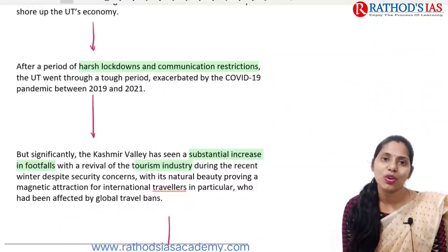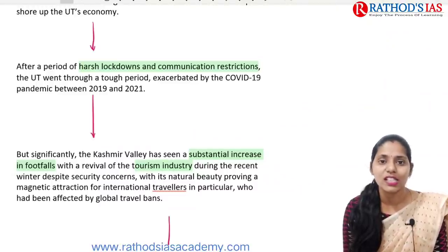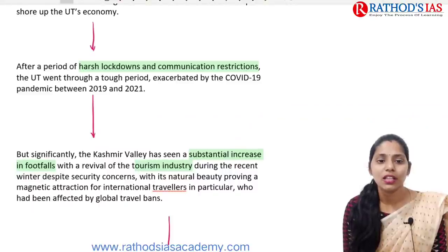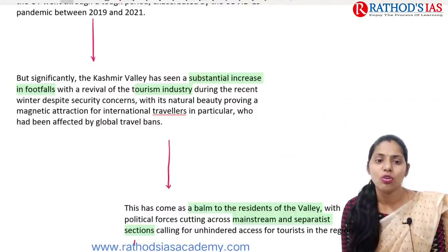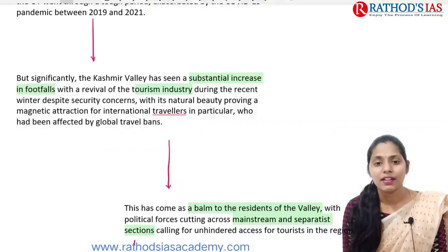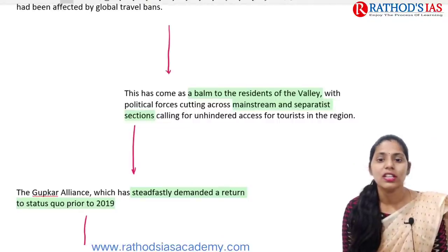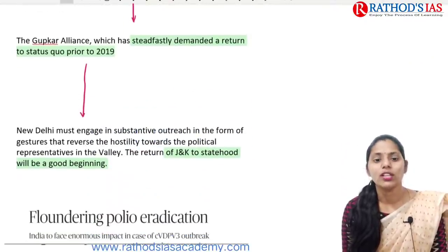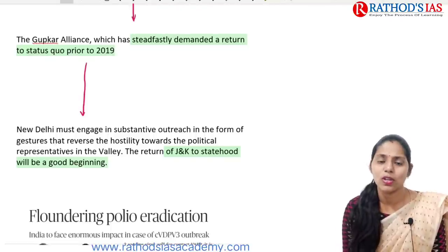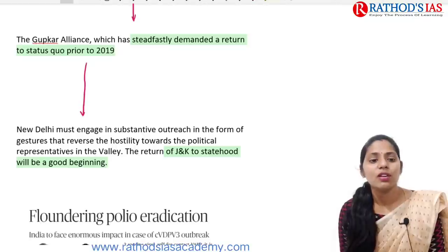There was a harsh period of lockdown due to the global pandemic, and communication restrictions because of the revocation of Article 370, including the shutdown of internet in Jammu and Kashmir. The Kashmir Valley has been seeing a substantial increase in footfalls and good signs of revival of the tourism industry, attracting tourists from different countries because of natural beauty. However, political parties like the Gupkar Alliance are mainly demanding restoring of statehood. The author says that even though there are many investments and developmental projects, restoring statehood for Jammu and Kashmir is a good beginning.